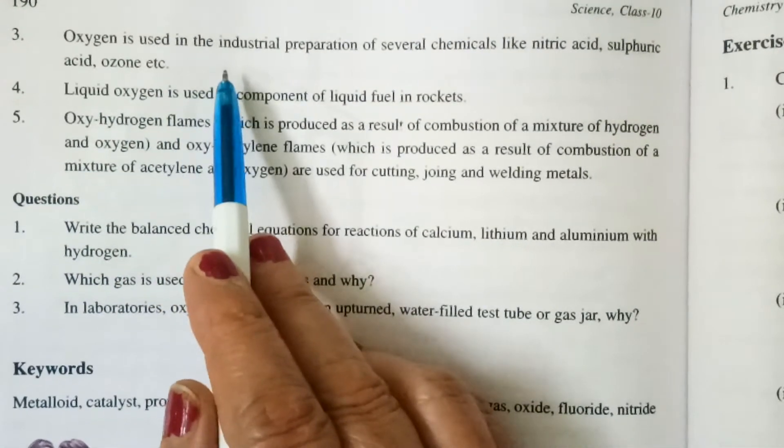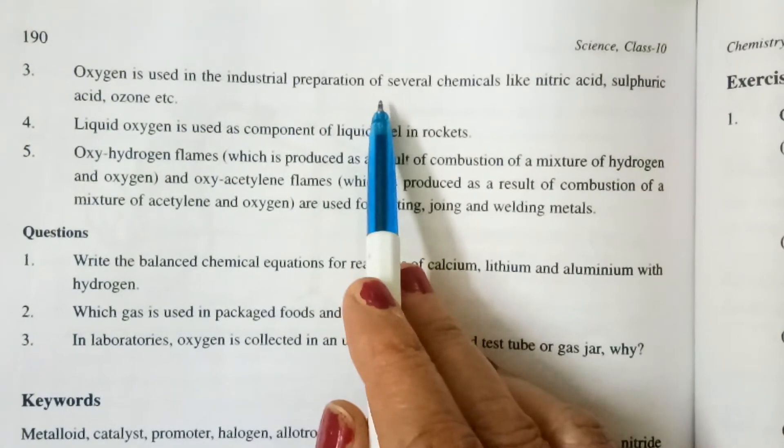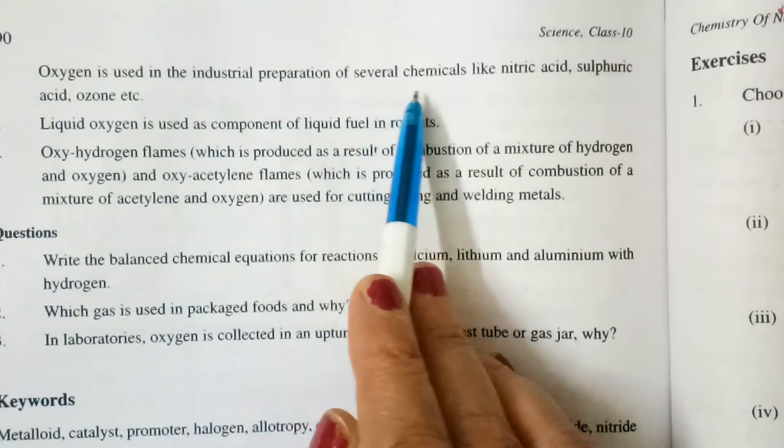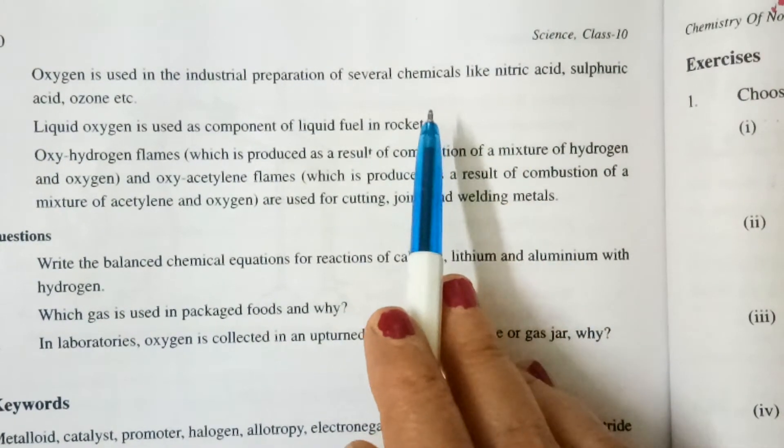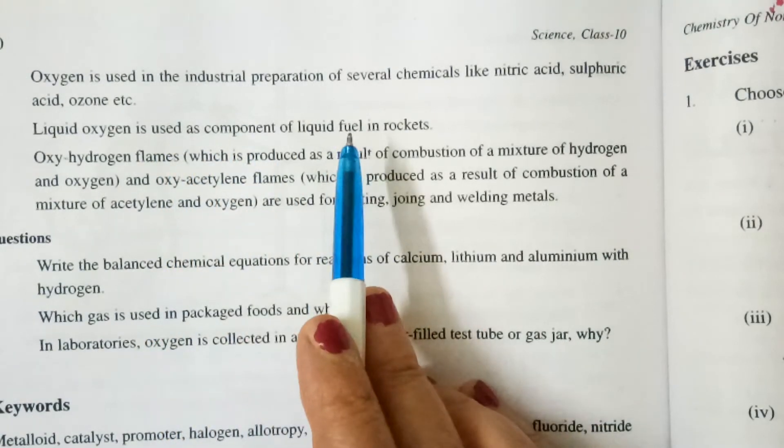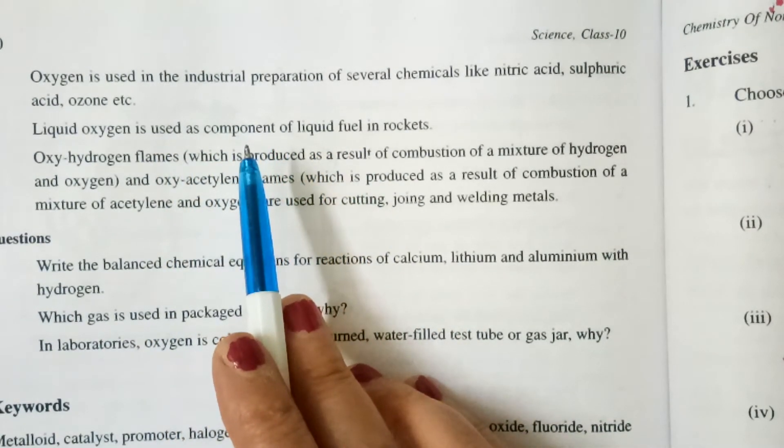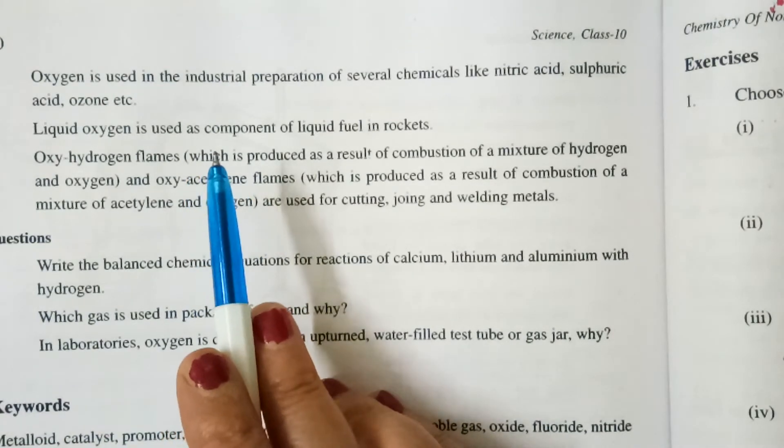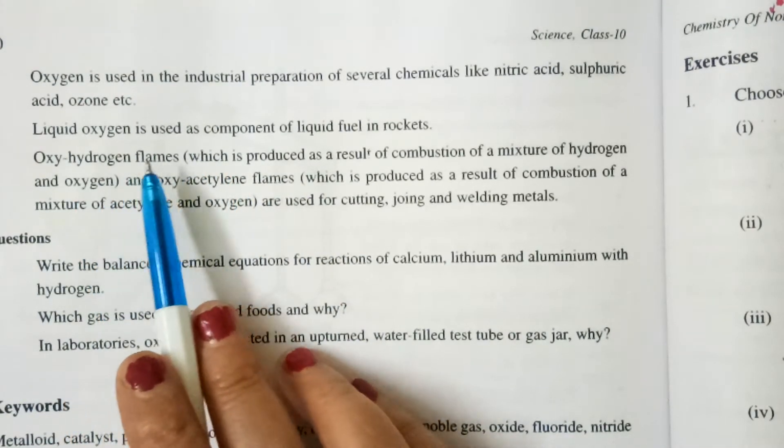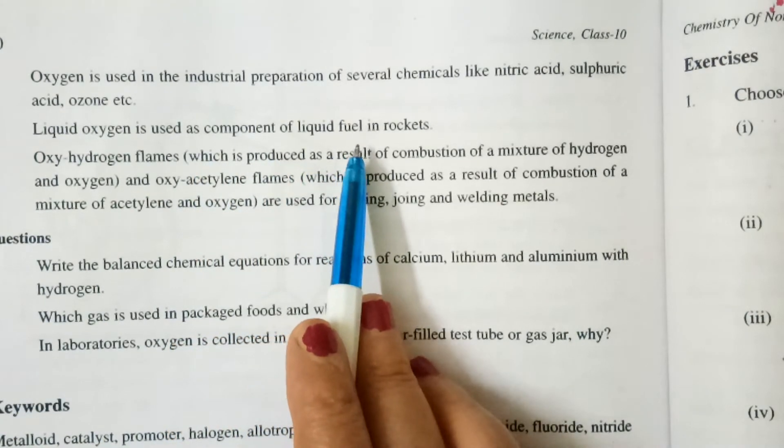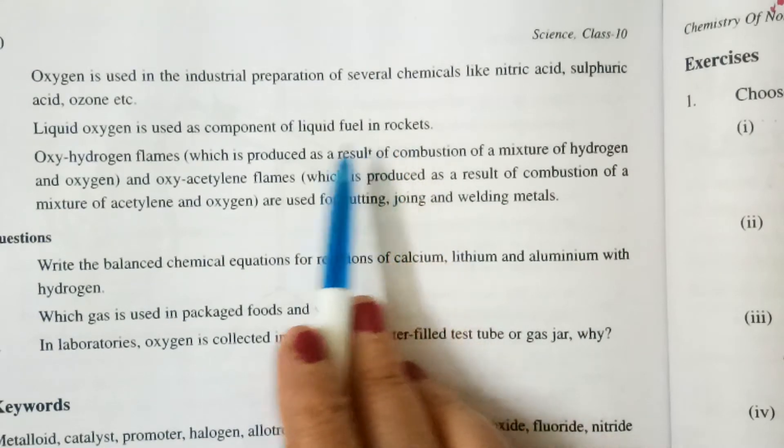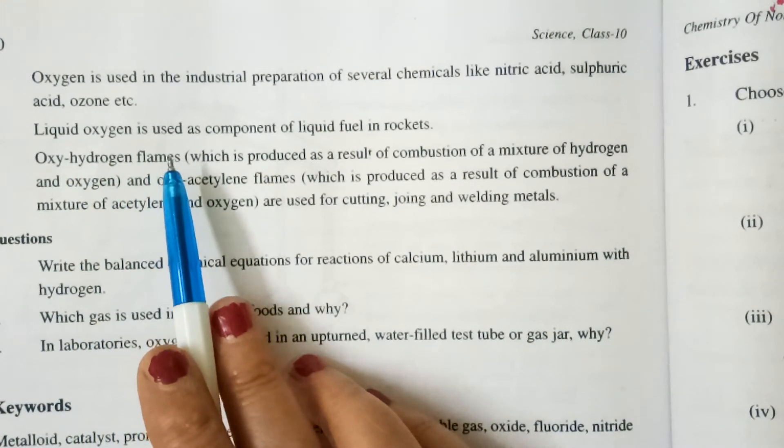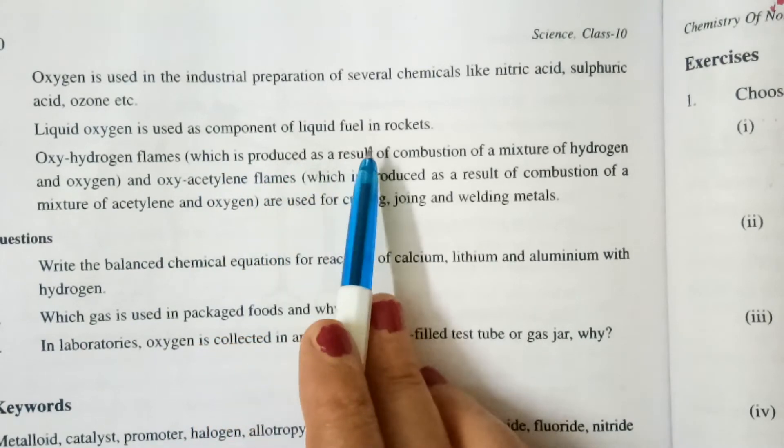Oxygen is used in the industrial preparation of several chemicals like nitric acid, sulfuric acid, ozone, etc. So for industrial preparation of nitric acid, sulfuric acid, ozone, oxygen is used in industrial preparations. Liquid oxygen is used as component of liquid fuel in rockets. Oxygen is used as a component of liquid fuel in rockets.